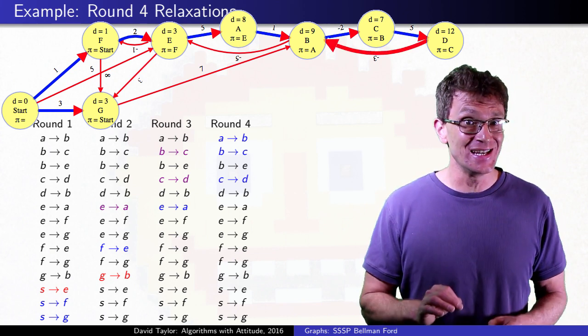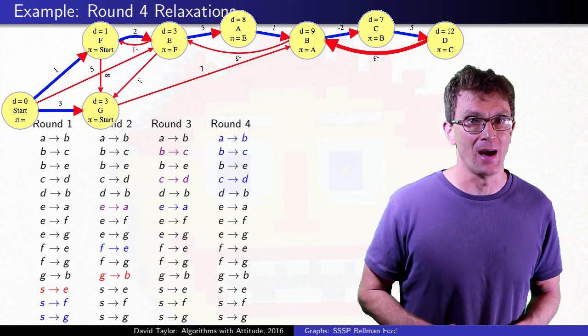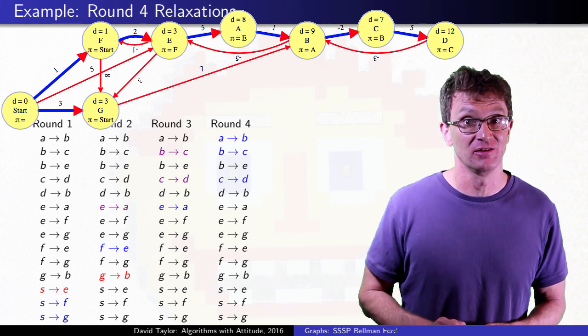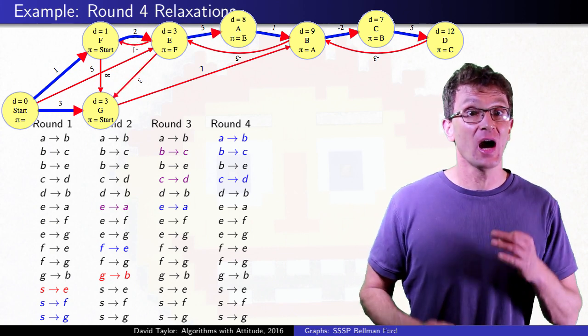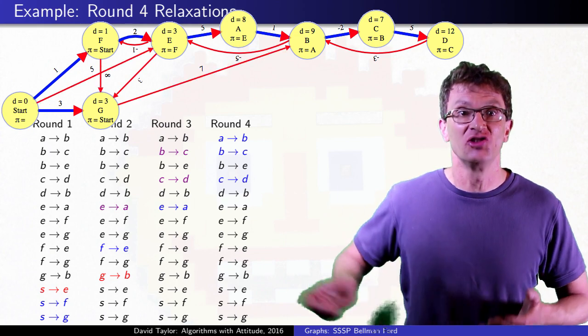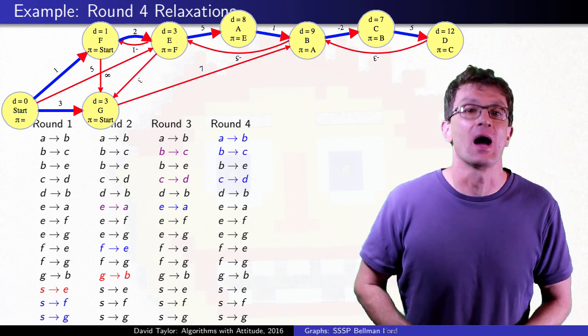Also notice, when we relax the D to B edge, it has a path equal in weight to the old path, but we don't change parents for equal distances. If we did, we'd cut off our path from the start vertex, because we'd be trying to add a zero weight cycle to the shortest path we've already calculated.